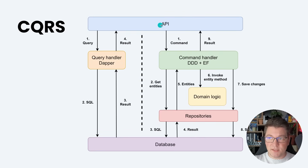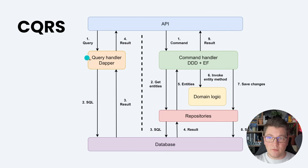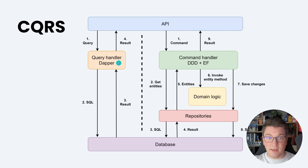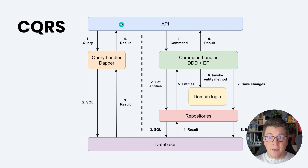Here's the high-level view of my system with my API as the entry point — my presentation layer — which takes in an incoming API request and turns it into either a query or a command. On the query side, a query object is sent from the endpoint to the respective query handler. I like to write raw SQL queries with Dapper because I get excellent performance and can return a specific read model that exactly matches the query I'm executing. The query handler sends a SQL query to the database, gets back the result, and returns it from the handler to the endpoint and back to the user.